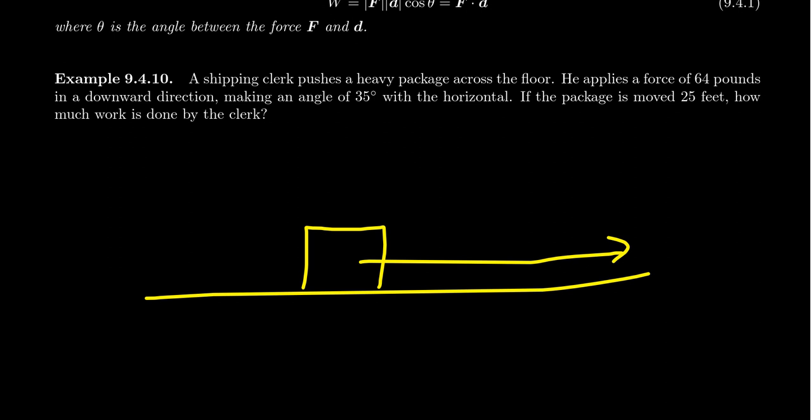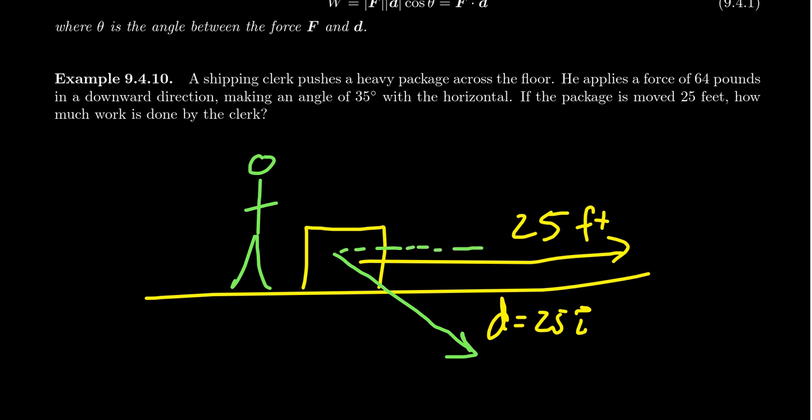We have the ground, we have a box. This box needs to move 25 feet—this is our distance vector, distance equals 25i. The force vector, because the man is probably taller than the box, he's exerting the force in a downward direction. With respect to the horizontal, this angle is 35 degrees, and he's applying a force of 64 pounds.